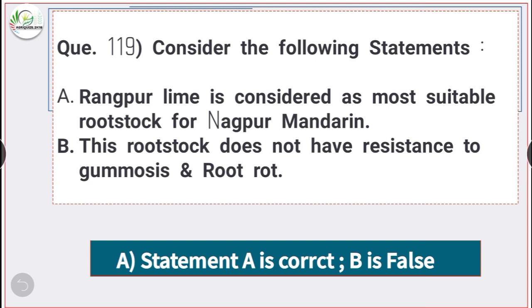Question number 119: Consider the following statements. Statement A: Rangpur lime is considered the most suitable rootstock for Nagpur mandarin. Statement B: This rootstock does not have resistance to gummosis and root rot. Only statement A is correct and statement B is false.